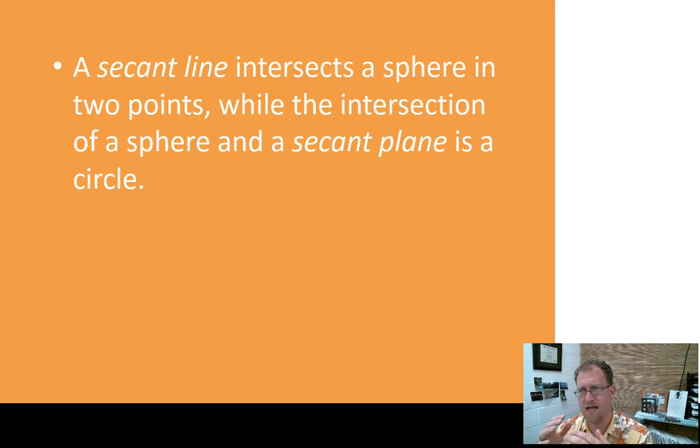And so the concept here of a secant plane is a plane that intersects the sphere. Anytime a plane intersects the sphere at more than two points, so it's not a tangent plane, it's a secant plane. It intersects at more than two points or at least two points, then you create a circle. So a circle is the intersection of a secant plane and a sphere.